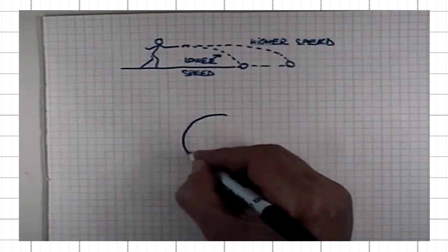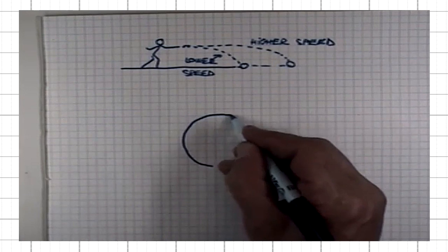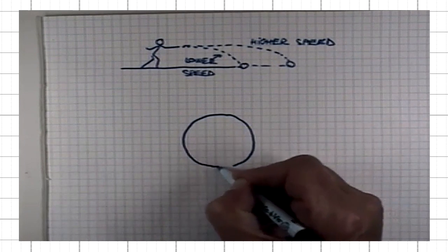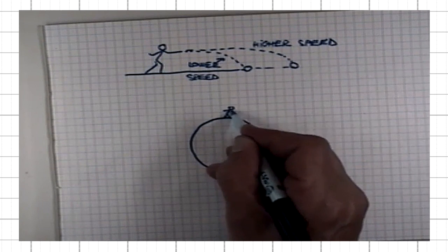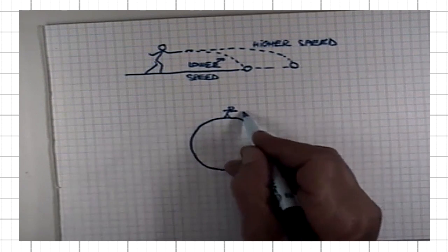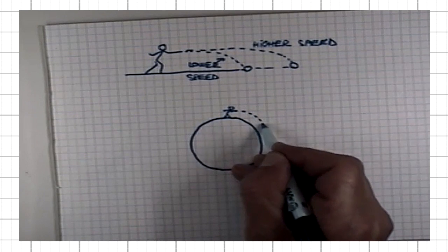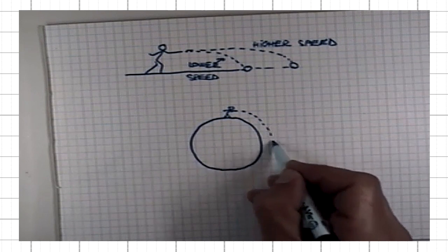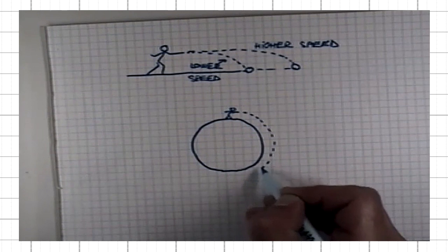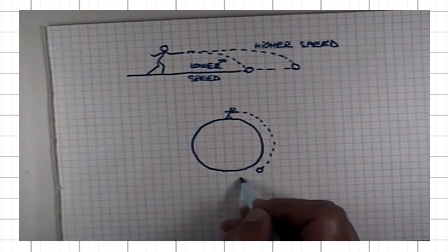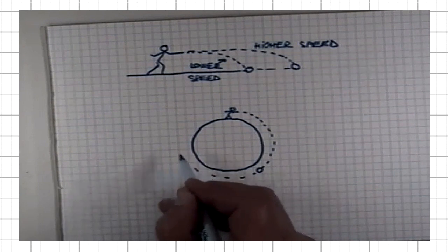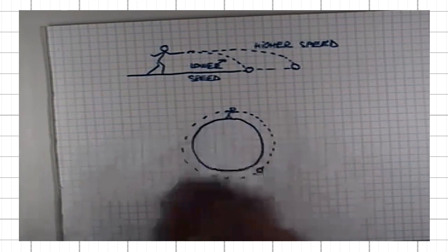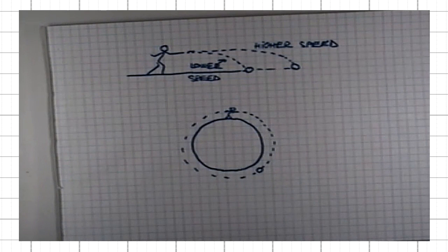Now, if you imagine a superman with a really strong arm throwing the ball with great enough speed, if the speed is large enough, the ball would be falling constantly, but because the surface of the Earth is curving, it never actually falls down. It would hit the pitcher in the back of the head.